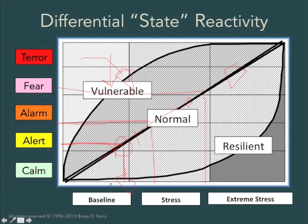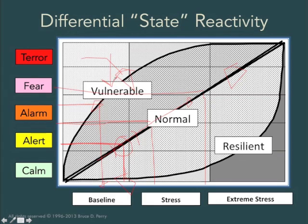And what that means is, even at baseline, in the absence of any external threat, their brain says that they are under attack. What that means is they will think differently, they'll function differently, and they will behave differently. This underlies many of the observations of educators, caregivers, and mental health professionals who work with children and adults who've been exposed to trauma. We'll talk more about this in a future series.